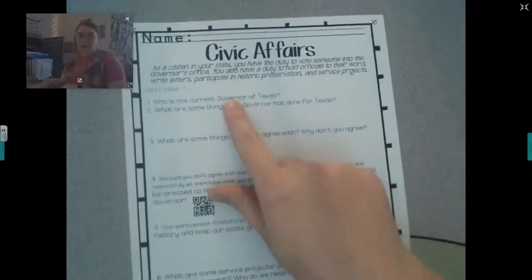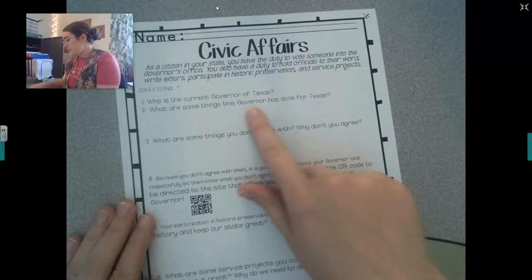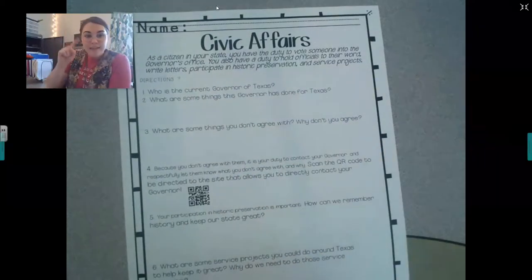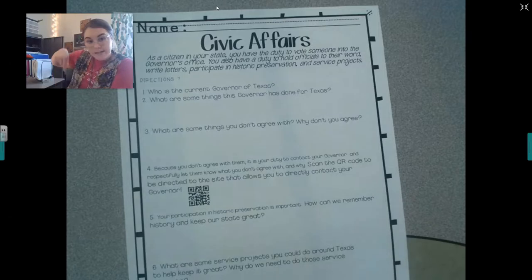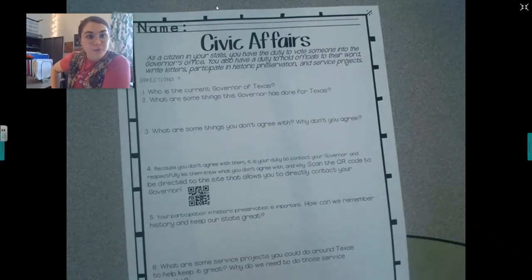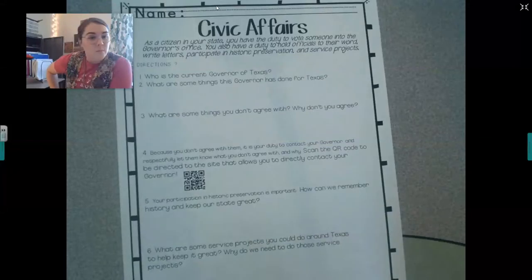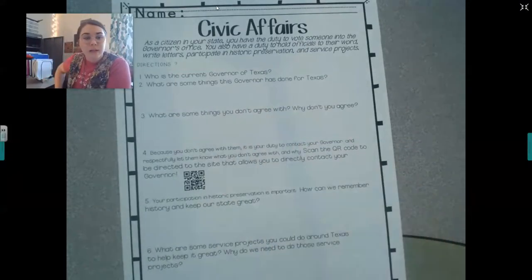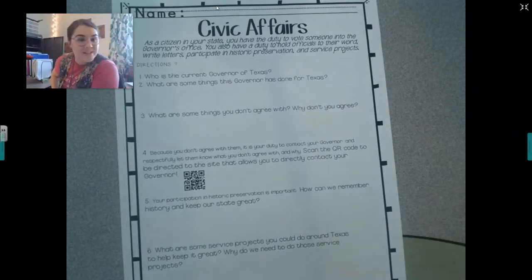Let's take a look at your assignment for today. It's very similar to what you did yesterday — it is called civic affairs. You're going to tell me who the current governor of Texas is, which I just told you is Greg Abbott. What are some things this governor has done for Texas? That link I just showed you, I'm going to post it right down below so you can go take a look and find that answer for yourself. What are some things that you don't agree with and why? When you read through what the governor has done for Texas, what is something you don't agree with? Feel free to talk to your parents about this and get their opinions.